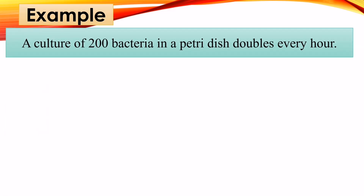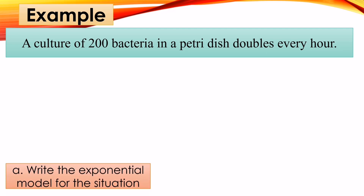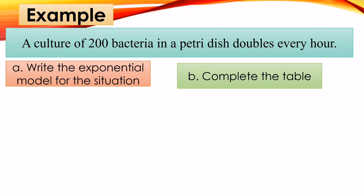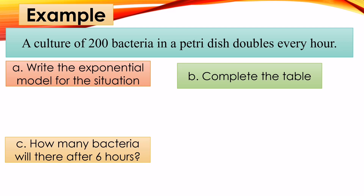Another example: A culture of 200 bacteria in a petri dish doubles every hour. A) Write the exponential model for the situation. B) Complete the table. C) How many bacteria will there be after 6 hours? First, let's write the exponential model. Recall the formula y = y₀ · 2^(t/T). We identify the given: the initial amount is 200 bacteria, and the unit of time T is 1 hour since the bacteria double every hour.